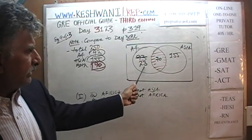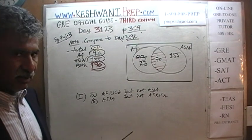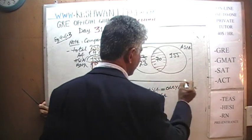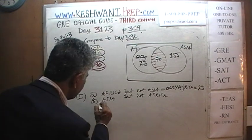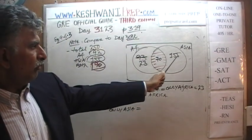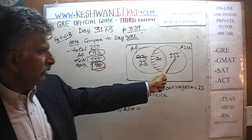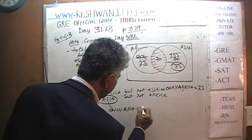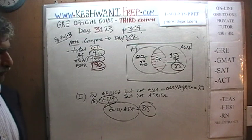That 23 represents the number of people out of the 250 who have been to only Africa — Africa but not Asia. And we just found out that's 23. Similarly, people who have been to Asia but not Africa — only Asia — well, 155 people have been to Asia; of those 155, 70 have also been to Africa, and those 70 are already counted. We subtract 70 from 155: 14 minus 7 is 7, so it's 85. 85 people out of 250 have been to only Asia.